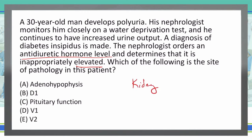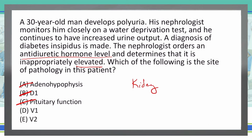That's going to allow us to mark out some of these answer choices. Pituitary function is up in the brain — that's not going to be anything here. Same with the adenohypophysis. And D1 receptors are all in the central nervous system as well. So now we're down to the V1 and V2 receptors. V1 vasopressin receptors are mostly going to be affecting smooth muscle issues, so not so much in the ADH role alongside diabetes insipidus. That leaves me with V2 as my only answer — V2 is my final answer.